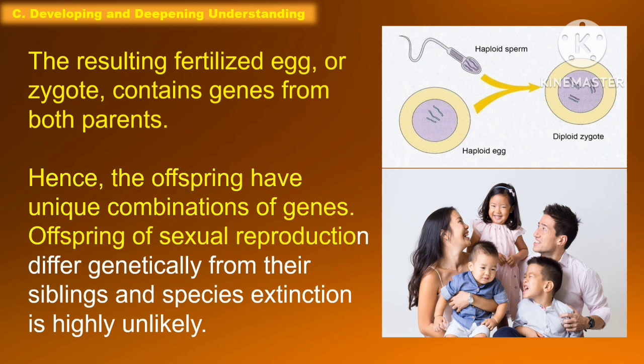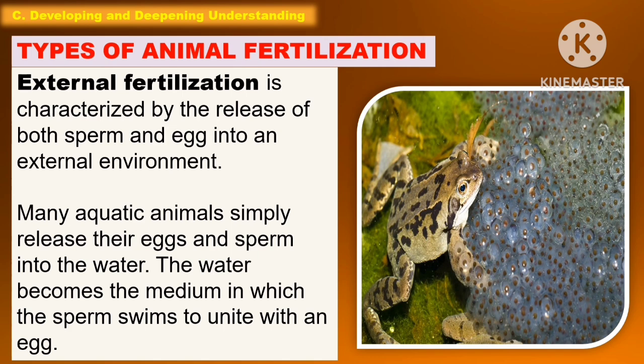Hence, the offspring have unique combinations of genes. Offspring of sexual reproduction differ genetically from their siblings, and species extinction is highly unlikely. The following are the types of animal fertilization.